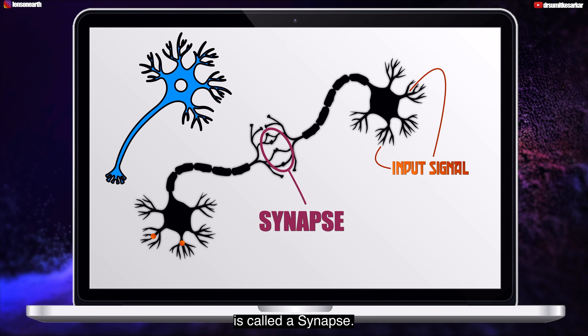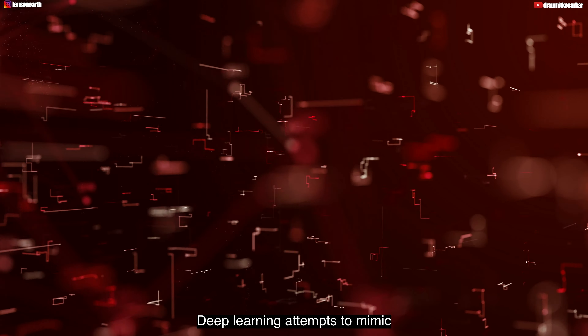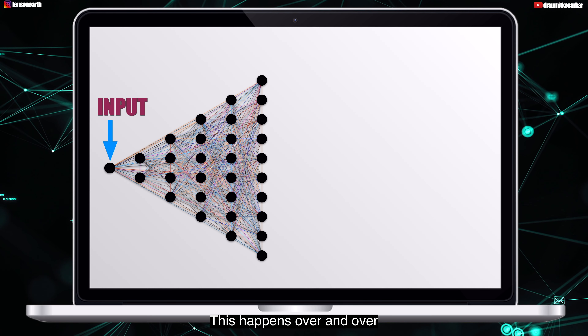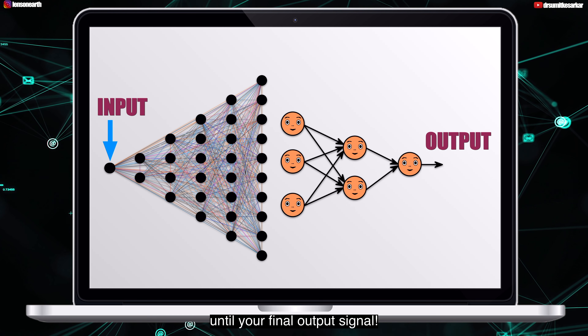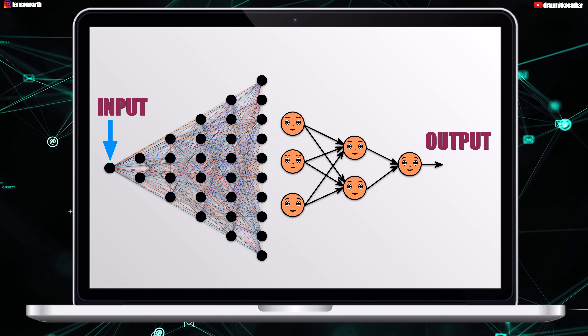The human brain processes information through a chain of neurons communicating with each other, known as a human neural network. In the human brain there are about 100 billion neurons, and each neuron connects to about 100,000 of its neighbors. The neuron has a body, dendrite and an axon. The signal from one neuron travels down the axon and transfers to the dendrite of the next neuron. That connection where the signal passes is called a synapse. Deep learning attempts to mimic this activity happening in the layers of neurons in the neocortex of the human brain.